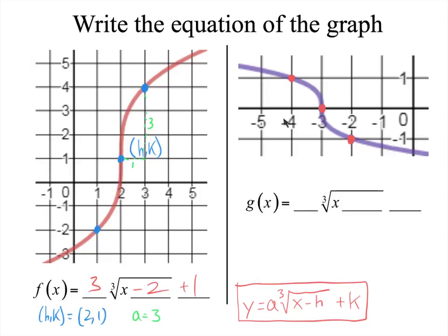So for this one, HK is right there. So my HK is equal to negative 3, 0.